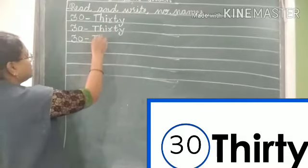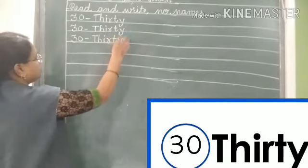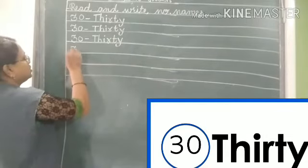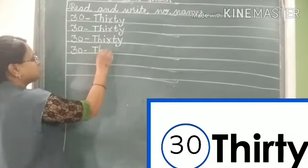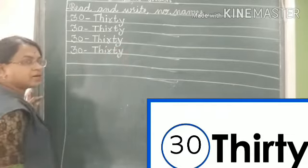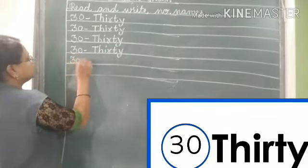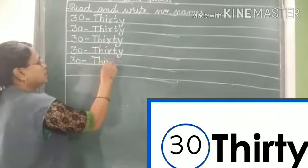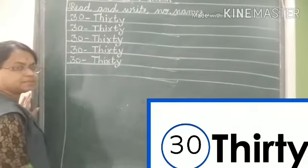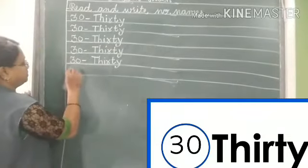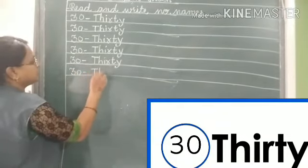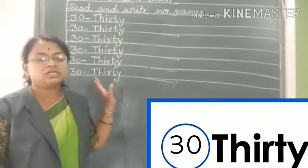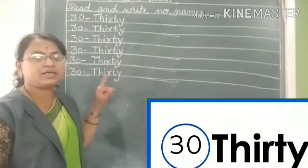Write in this row 30 T-H-I-R-T-Y, 30. T-H-I-R-T-Y, 30. This is the spelling of 30 T-H-I-R-T-Y.